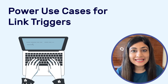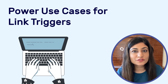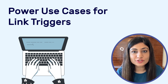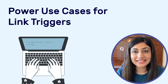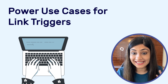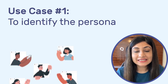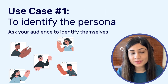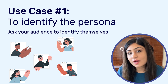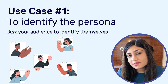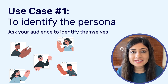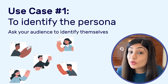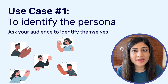Now let's understand link triggers through different use cases. The number one use case is to identify the persona — when you really want to ask your audience more about themselves, like what stage of journey they're at, what goals they'd like to have met and more.